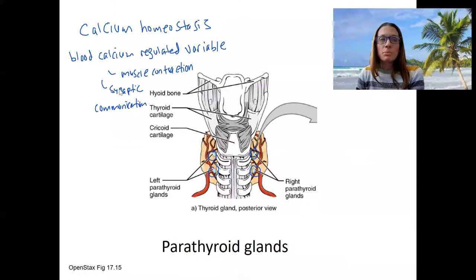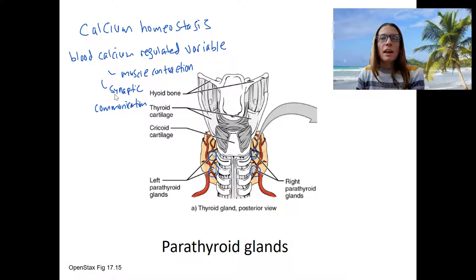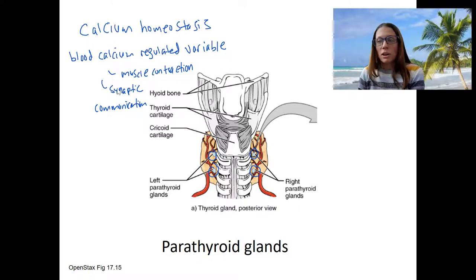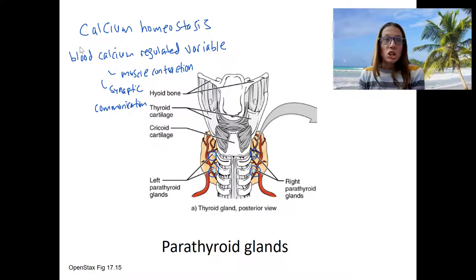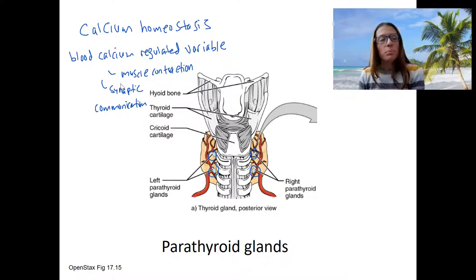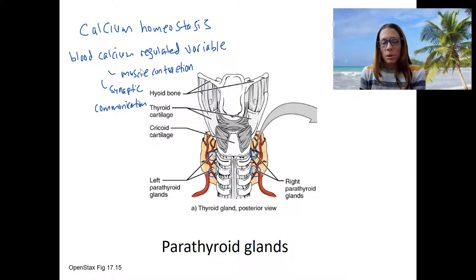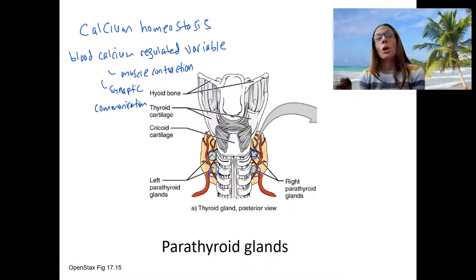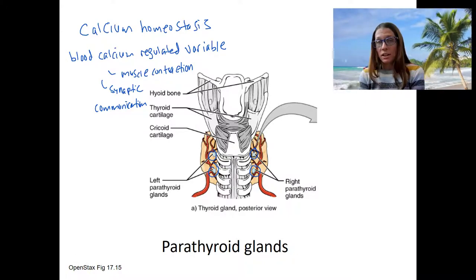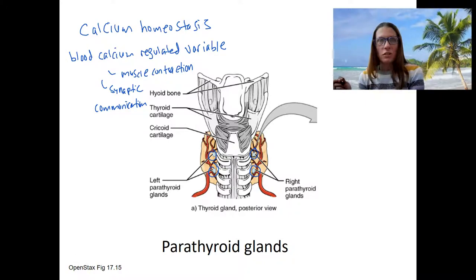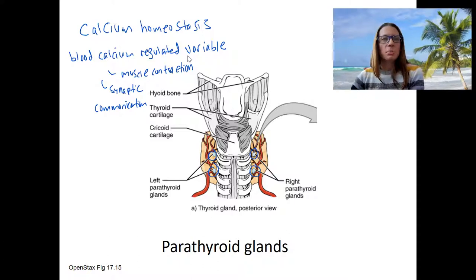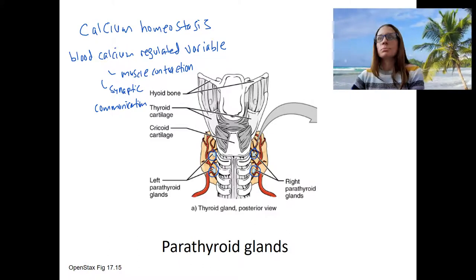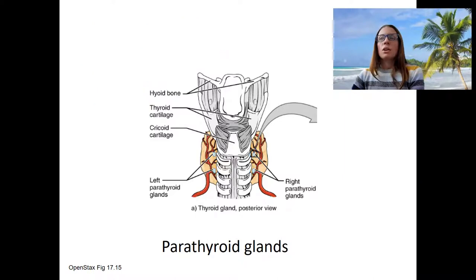It's required for synaptic communication. The release of neurotransmitter is dependent on exocytosis, which requires calcium. You don't need to know either of these yet or how they work, but I just want you to know you'll see them and it starts to get at why we care about this. Why does it need to be homeostatically regulated? Because we need it for things and we need the levels to be within a normal range.